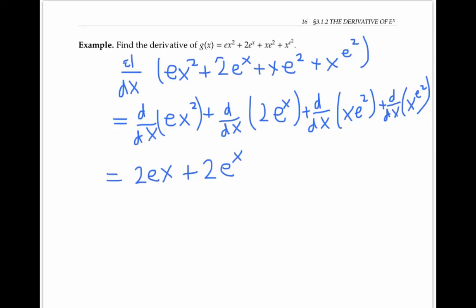For my third part, I have just x times a constant, e squared. So the derivative of x is one times that constant. And so I just get e squared.